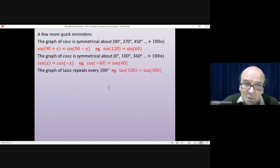Tangent, the easiest way to think about tangent is just that it repeats every 180 degrees. So, the tangent of 120 is the same as the tangent of 300, because all I've done is add on 180. If you add on or take away multiples of 180, you'll always get the same answer.